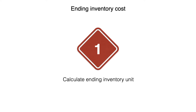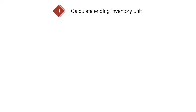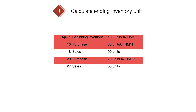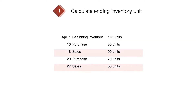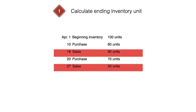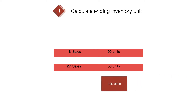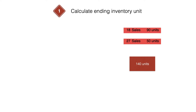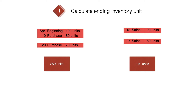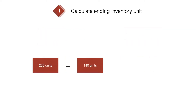We start by calculating the ending inventory unit. What we have to do is add the beginning inventory units and all the purchases. We will get 250 units. Then we calculate the total of sales in units to get 140. We subtract 140 units from 250 to get the ending inventory unit, which is 110.